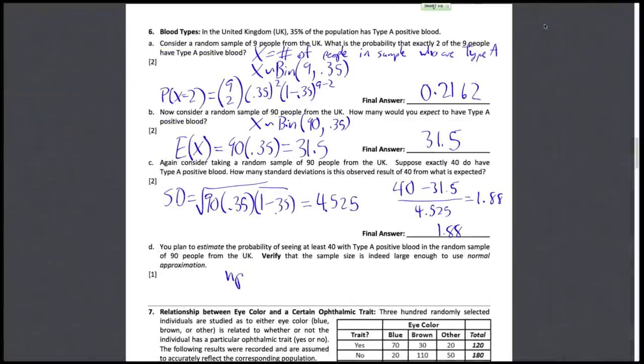So NP, we calculated this up here before. That's 90 times 0.35, which is 31.5. And yes, that is indeed greater than or equal to 10.